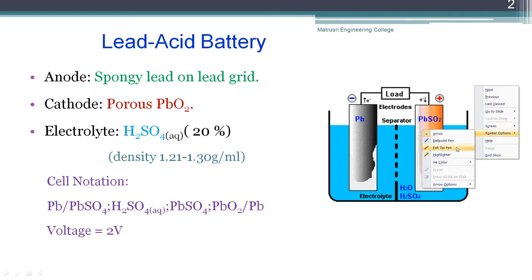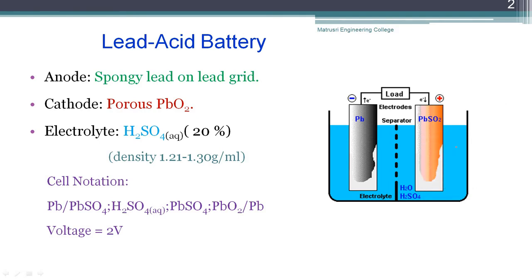Lead acid battery - you can understand from the name it contains lead electrodes and acid electrolyte solution, that is the reason it is called lead acid battery. It is also known as lead accumulator. Lead accumulator means during the battery operation when the battery is operating as a voltaic cell or discharging, the lead sulfate is accumulated near the electrodes, deposited in the form of lead sulfate.